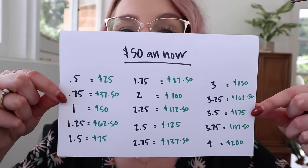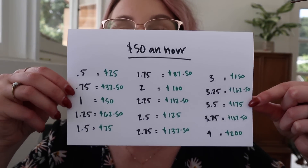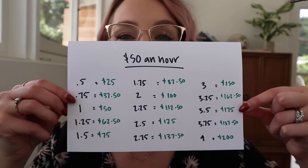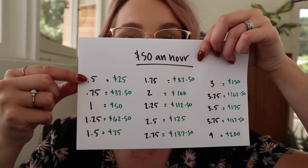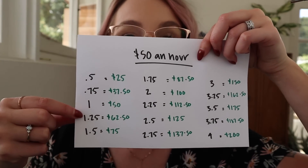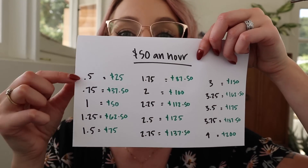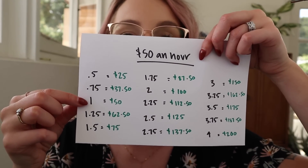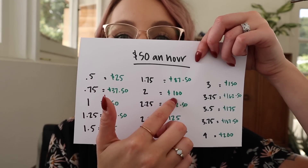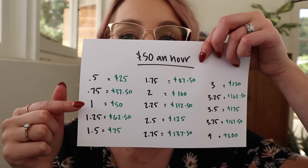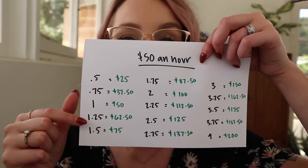Once I figured out how much I wanted to make per hour based on my yearly goal, I broke it down further with another chart. Let's say you want to make $50 an hour. I broke it down by half an hour, 45 minutes, an hour, an hour and 15 minutes, an hour and a half, and so on. One hour equals $50, so half an hour would be $25 and two hours would be $100. I figured out exactly what my pricing needed to be based on the service time.